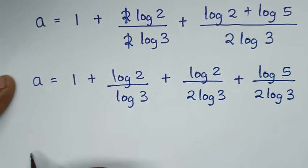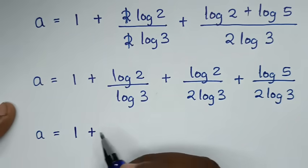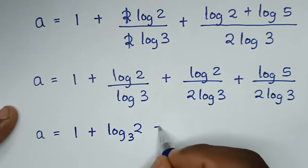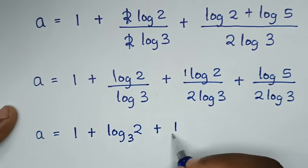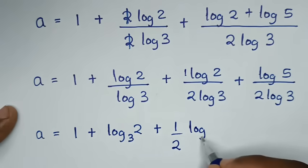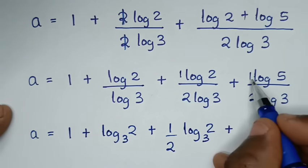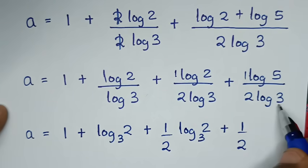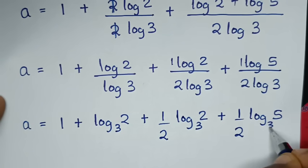Then in the next step, it will be a is equal to 1 plus — log of 2 over log of 3 is the same as log of 2 base 3, plus here is the same as 1 over 2, so 1 over 2 times log of 2 over log of 3 is the same as log of 2 base 3. Then plus, here is 1 over 2, so 1 over 2 times log of 5 over log of 3 is the same as log of 5 base 3.